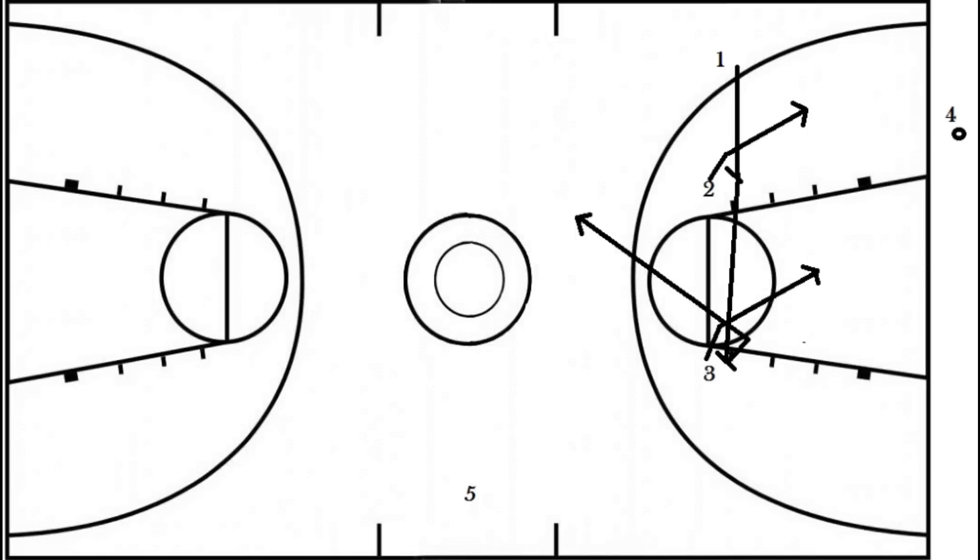After each screen, players 2 and 3 will cut towards the inbounds player. If player 1, 2, and 3 are not open for the pass, player 5 will then cut down to the free throw line. But if players 2 and 3 are open, the inbounds player will then pass the ball.